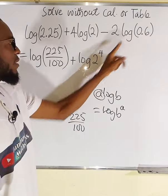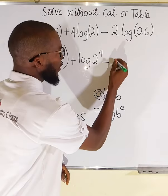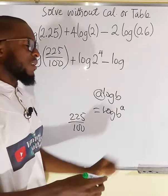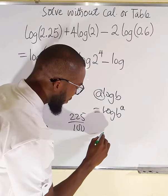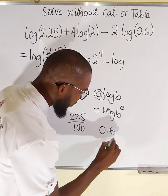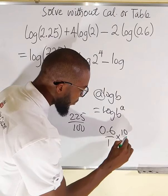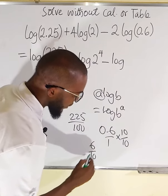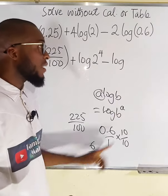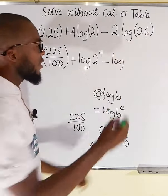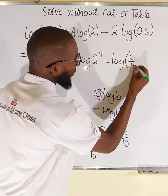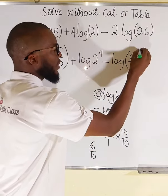Again we can apply the same thing here. 0.6 can be written as 0.6 divided by 1. We can multiply top and bottom by 10 so that this becomes only 6 divided by 10. Therefore 6 divided by 10 is the same thing as 0.6. So we write 6 divided by 10 all to the power of these two right here.